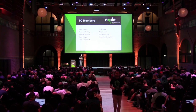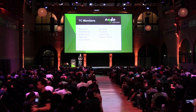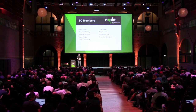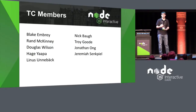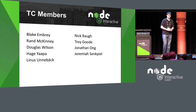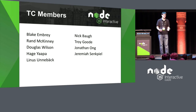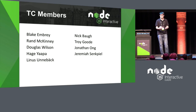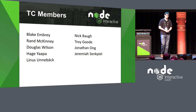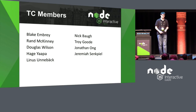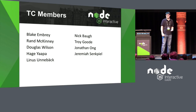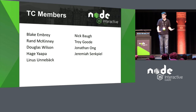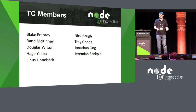Just a quick overview of who the actual TC members are — we have nine members. You may or may not recognize some or all of them, and they don't all do everything in Express since it's a fairly large project and different people focus on different areas. You have Blake, Rand, myself, Yappa, Linus, Nick, Troy, Jonathan, and Jeremiah.